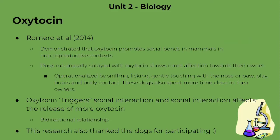Romero et al., conducted in 2014, was a study based on oxytocin and the effect it has on mammals. It demonstrated that oxytocin promotes social bonds in mammals in non-reproductive contexts. Participant dogs were intranasally sprayed with oxytocin, and as a result they showed more affection towards their owner. This affection was operationalized by sniffing, licking, gentle touching with the nose or paw, playful bouts, and bodily contact.